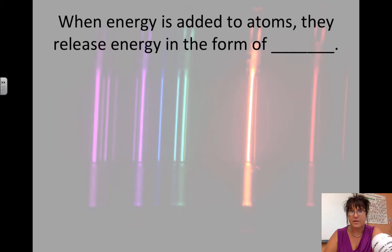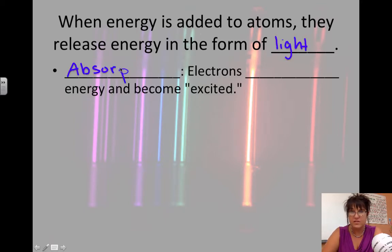When energy is added to atoms, they must release the energy, and they do so in the form of light. When energy is added to atoms, we call it an absorption, and the electrons absorb energy and become what we call excited.